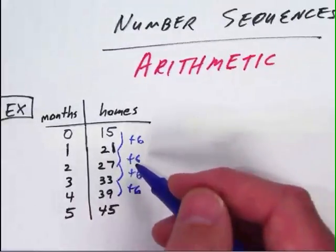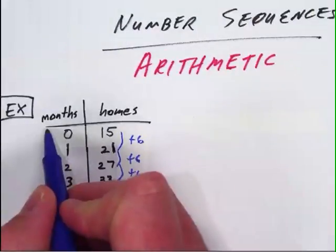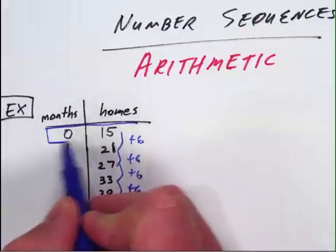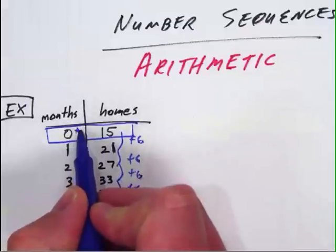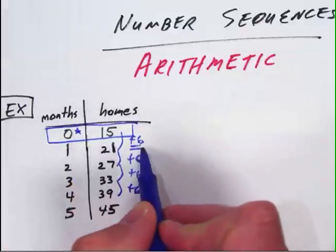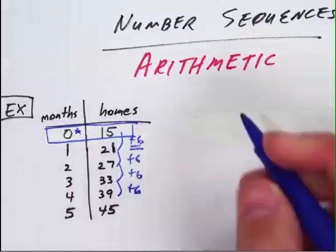Now the equation for this is based off of two things: what it starts at when our initial value up here is at zero, the zero is a key point, and then what it goes by. And in this case, it would be that plus six number.